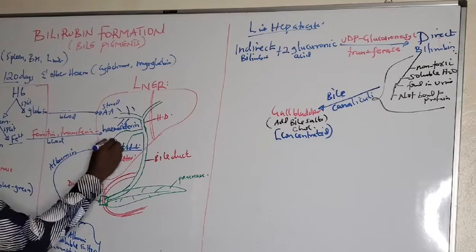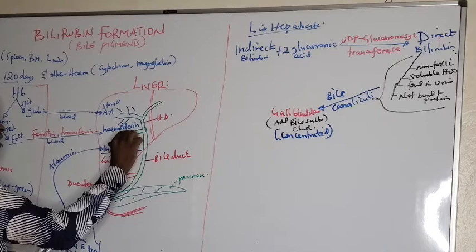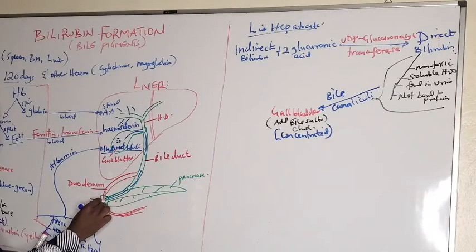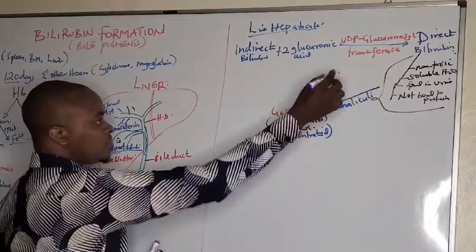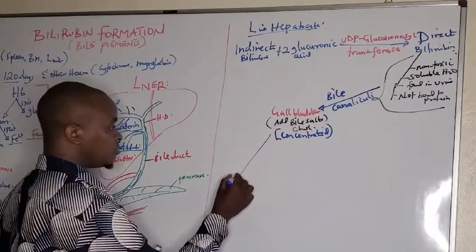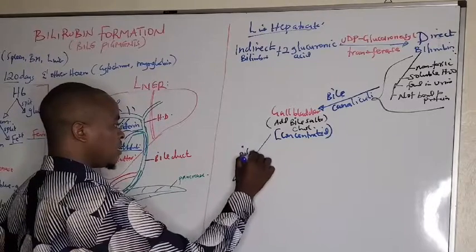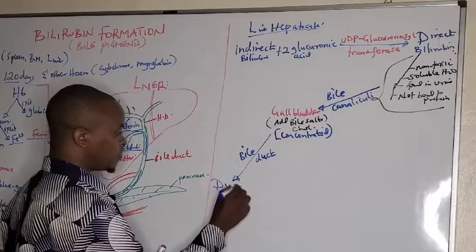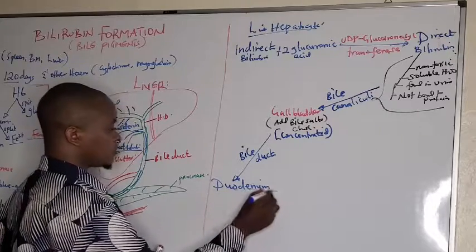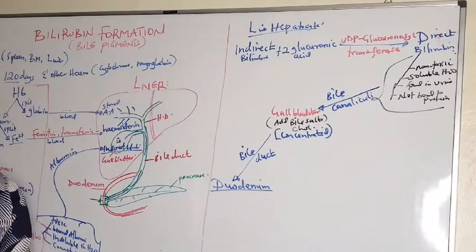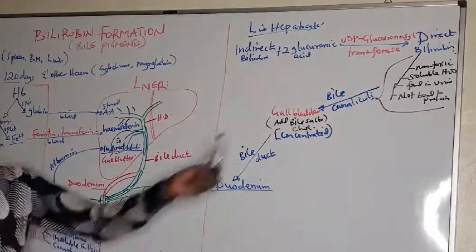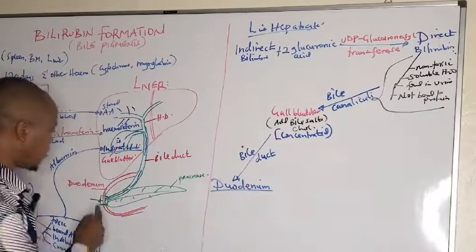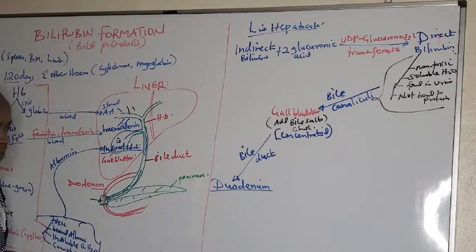From the gallbladder, this bilirubin moves via the cystic duct into the common bile duct, and from the common bile duct it moves into the duodenum via the bile duct. So this direct bilirubin, after being concentrated, moves via the bile duct to the duodenum, which is the first part of the small intestine.